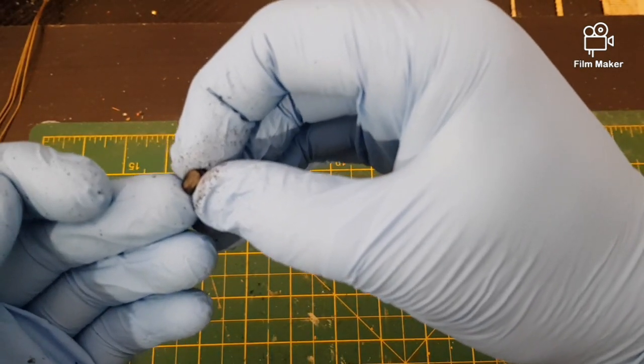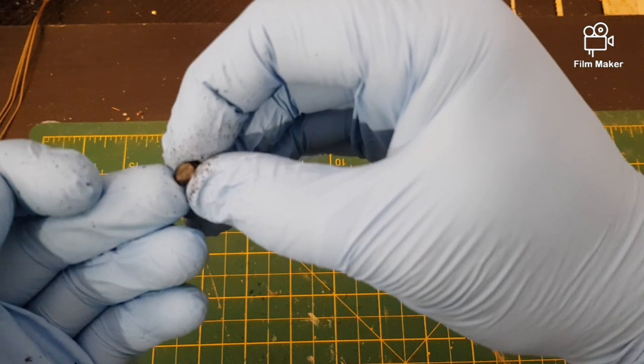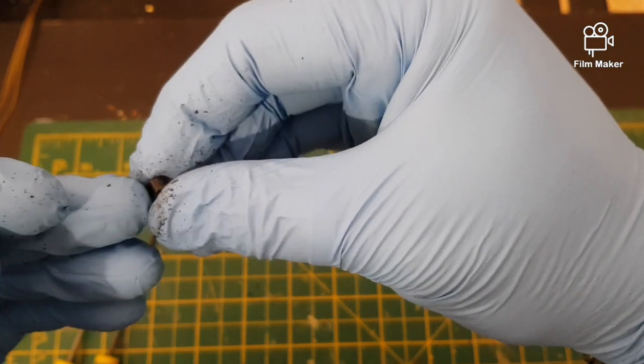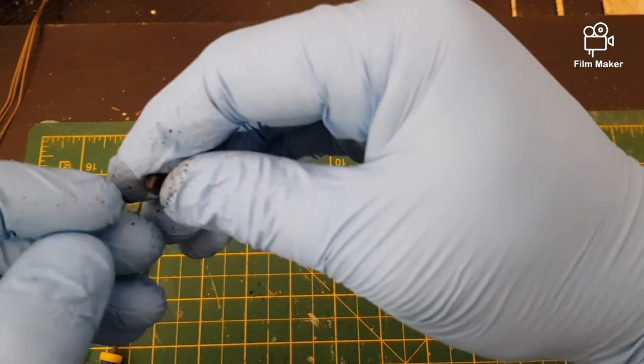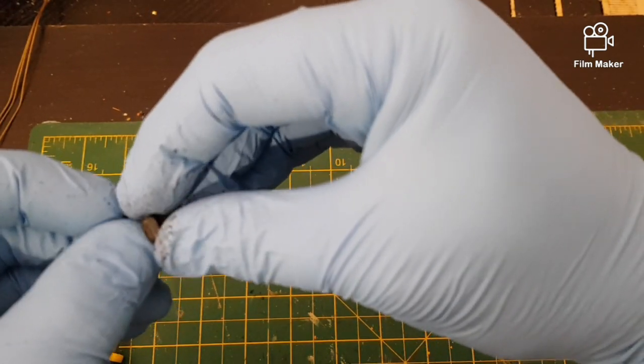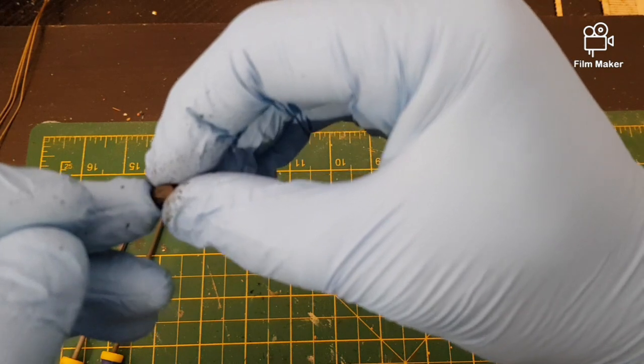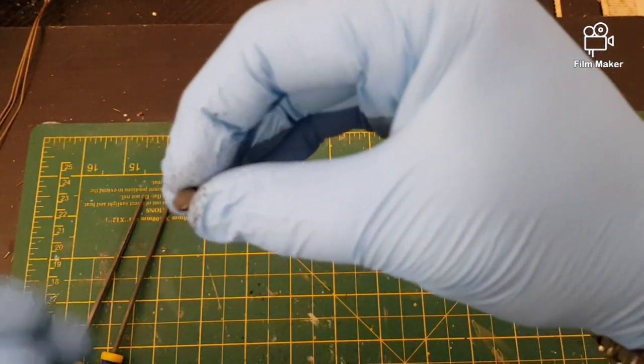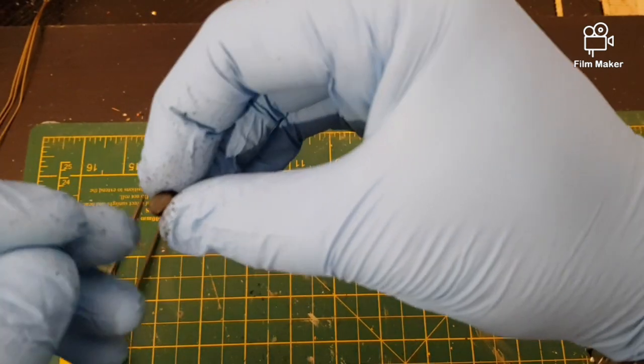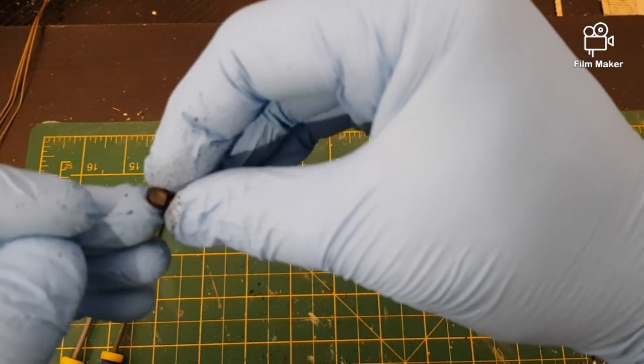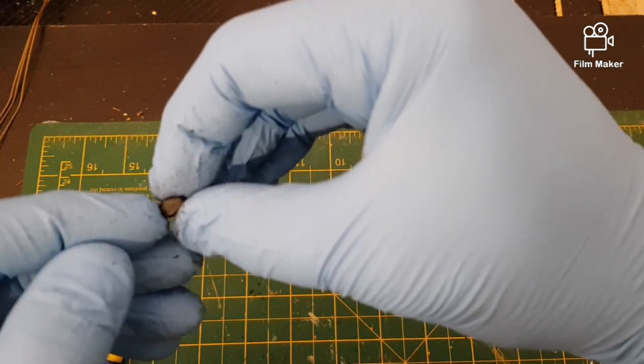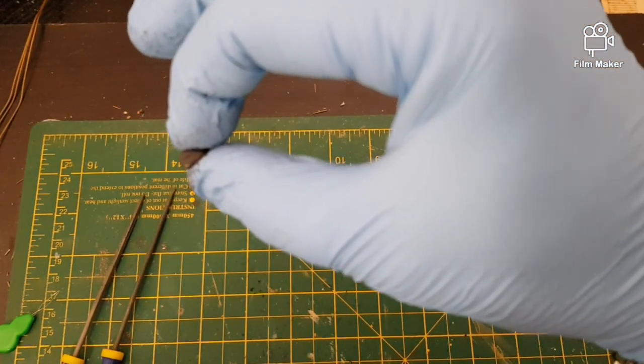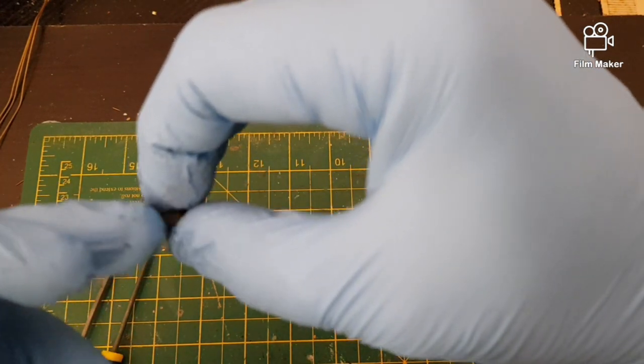So you can either spend out a lot of money on aftermarket blocks which, you know, after I built my Victory, if I bought the blocks it would have been exceptionally costly. So this is the method I use with the Victory. My Victory, all of them apart from the dead eyes, all the blocks themselves are actually the Heller ones which I've done the same modification I've done here.